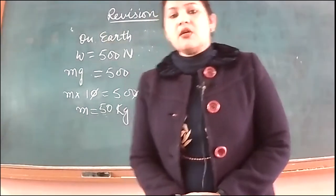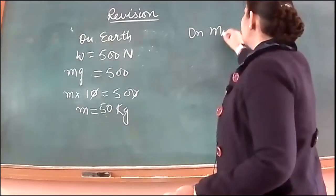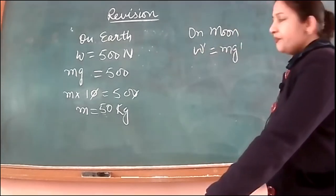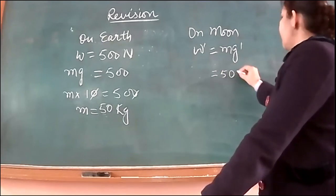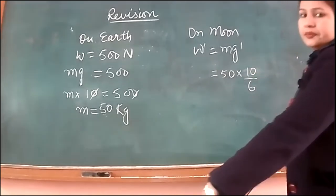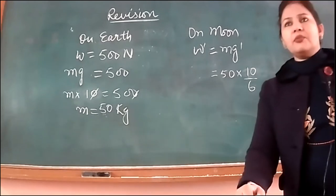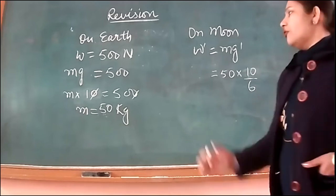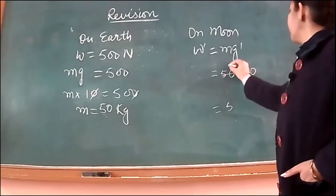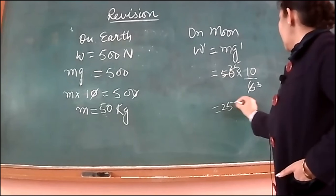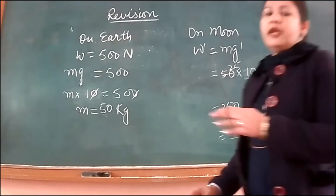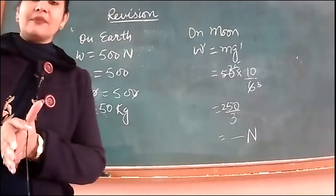So mass on moon is also 50 kg. We can find weight on moon. So let us say weight on moon is w dash. So that is mg dash. Mass on earth and on moon is 50 and g on moon is one-sixth of that on earth. So 10 by 6. Otherwise, you can also use the value 1.63. You can use direct value also of acceleration due to gravity on the surface of moon. So you can now call this 250 upon 3. That will be your weight on moon as well.